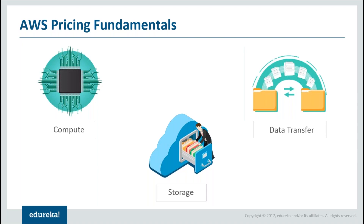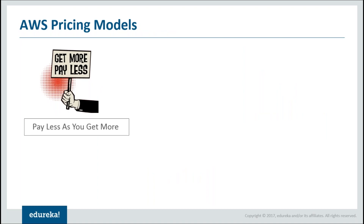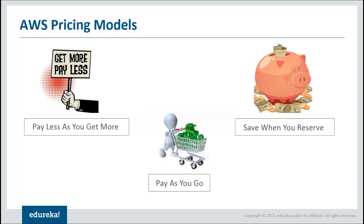AWS has three pricing models: pay less as you get more, pay as you go, and save when you reserve. Let's first talk about pay as you go. AWS has a very flexible pricing model - it charges you on an hourly basis, plus it charges you only for the compute capacity and resources which you are using. Say for example, your requirement is 40 GB for the first month but you end up only using 10 GB - 30 GB of space is wasted when you pay upfront. But if you're paying on hourly basis only for resources used, you're saving all that cost.